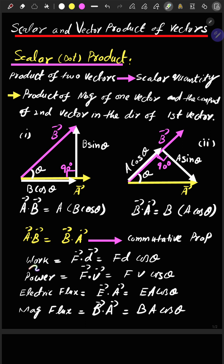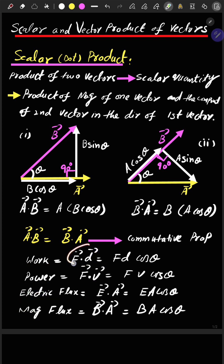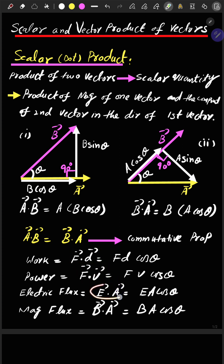Examples of scalar product are work, power, electric flux, and magnetic flux. These are the scalar products of force and displacement, force and velocity, electric field and vector area, and magnetic field and vector area, respectively.